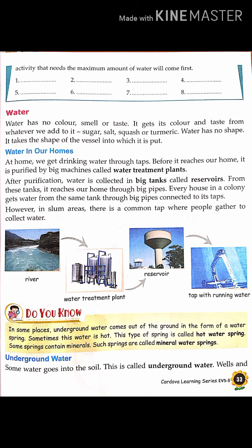How does water come to our home? At home we get drinking water through taps — in the bathroom, in the kitchen. Before it reaches our home, it is purified by a big machine called a water treatment plant. Before the water reaches our home, it is purified — meaning it is cleaned — in this big machine called a water treatment plant.